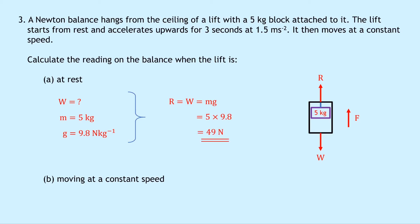Part B asks for the reading when the lift moves at constant speed. By Newton's first law, constant speed means balanced forces, so R equals W, which is again 49 newtons — the same as part A.